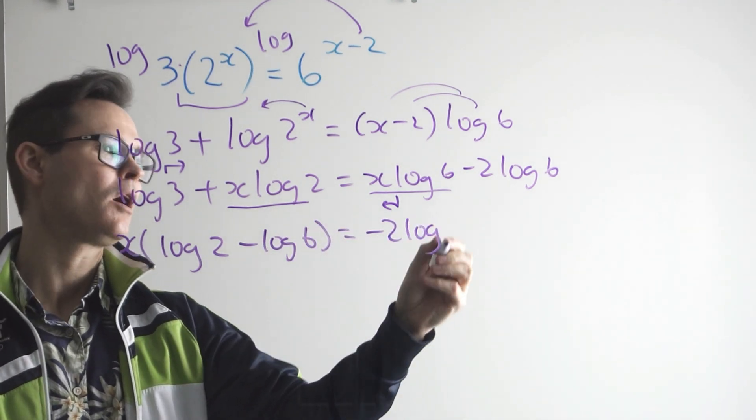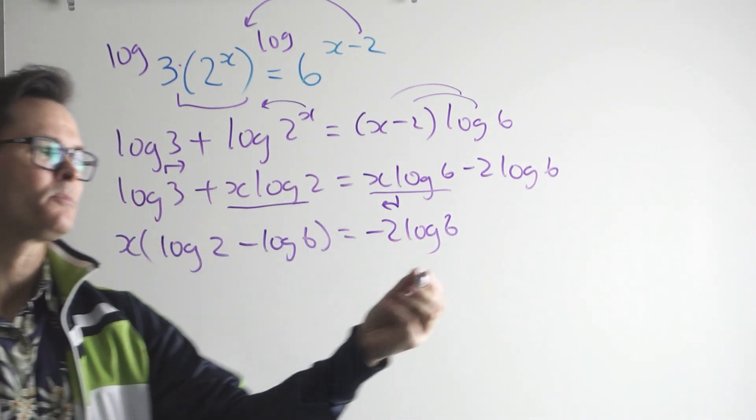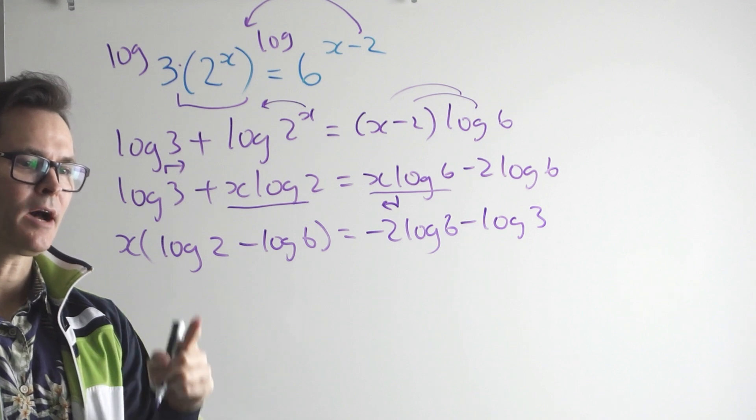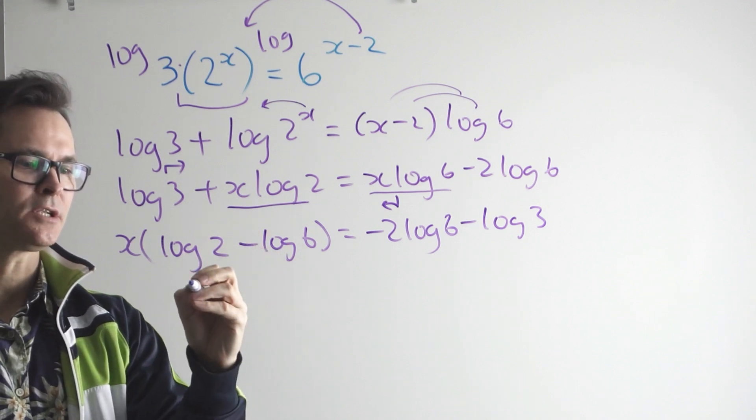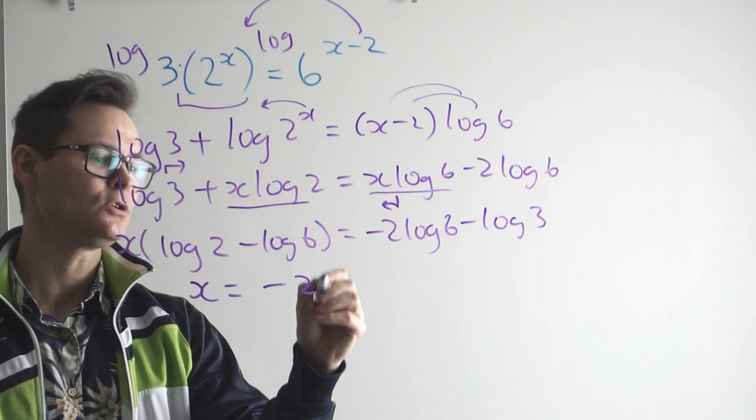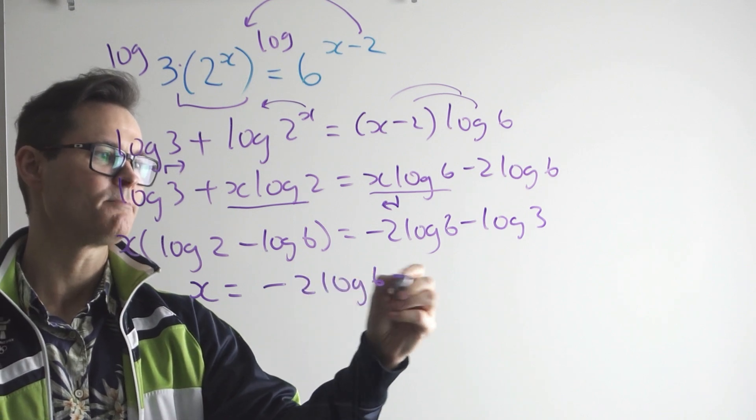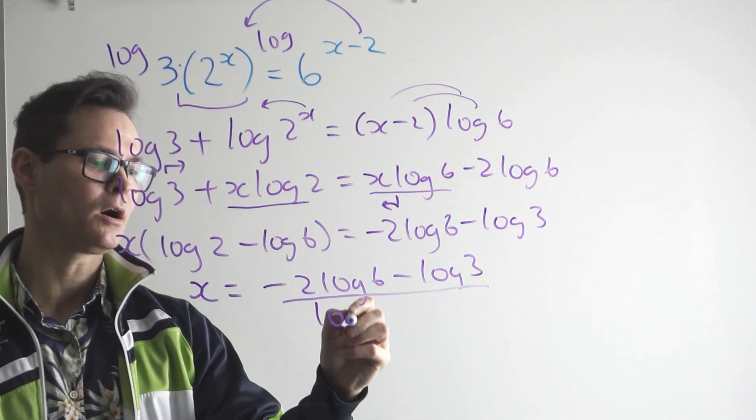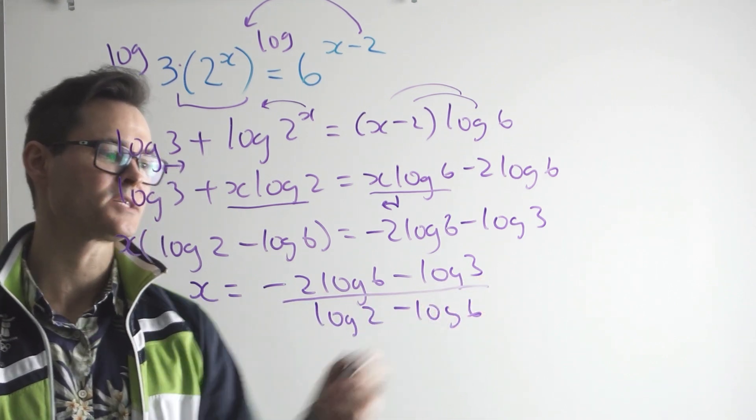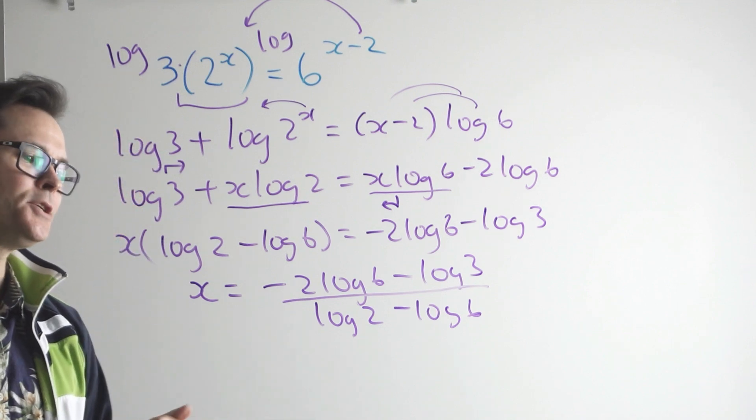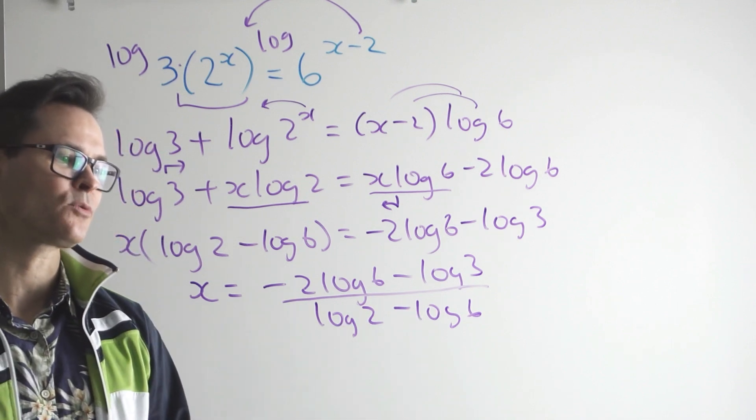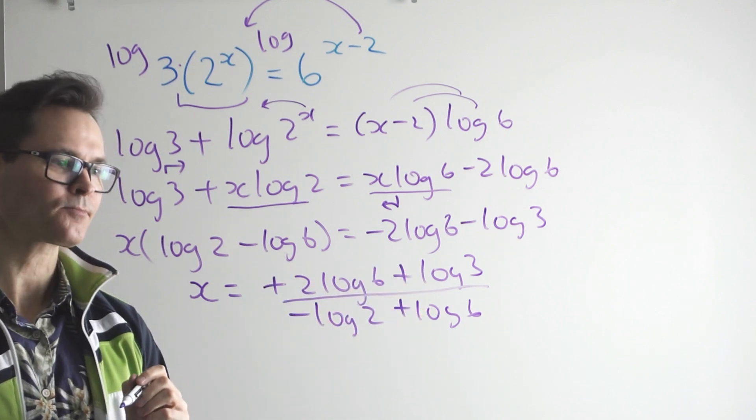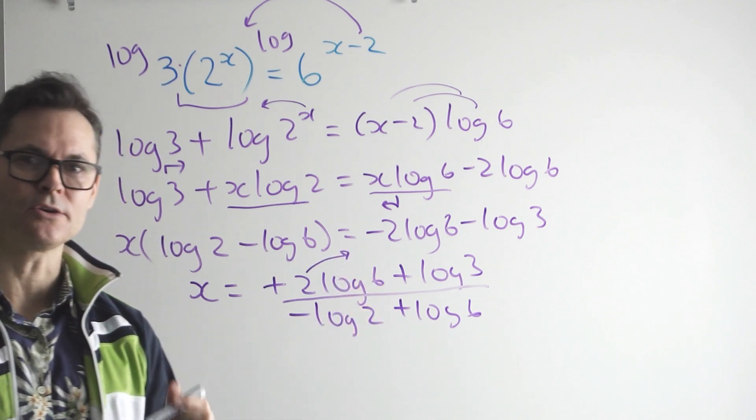Okay, and then I can divide. This becomes the coefficient, so x turns out to be negative 2 log 6 minus log 3, the answer looks ugly, all over the log of 2 minus the log of 6. Okay, and then your teacher may mention that since 3 of the 4 are negative, you can turn all of the signs opposites. Your teacher may then require you to write it as a simple log.